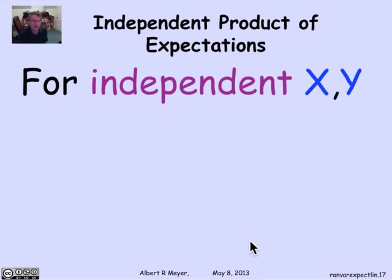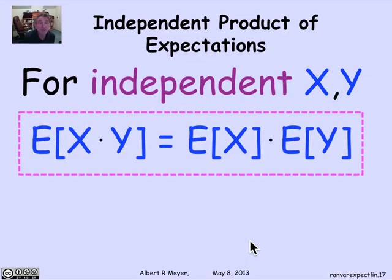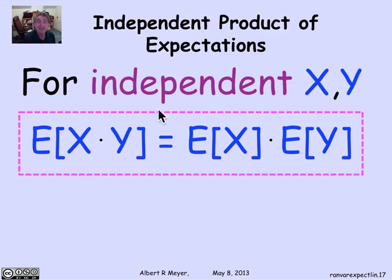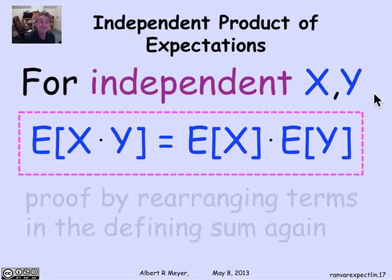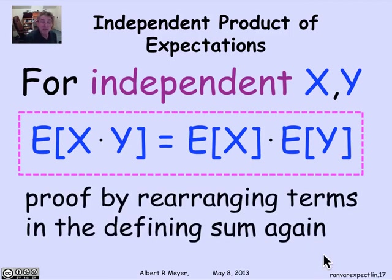That's the lovely rule about linearity of expectation, which holds regardless of independence. There is a rule for products, but it requires independence. The independent product rule says that the expectation of a product of two random variables x and y is the product of their expectations, providing they are independent. This extends to many variables if they're mutually independent.